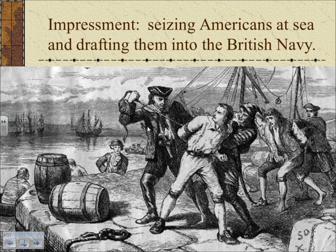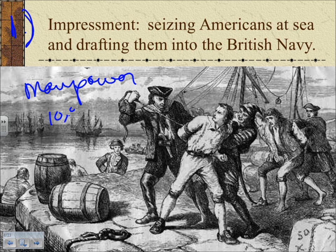Impressment is the number one issue cited as the reason we are going to declare war against Great Britain. British warships are seizing our ships, coming on board, and taking people with a British accent back to the British Navy. While fighting Napoleon, the British were losing manpower — something like 10,000 to 15,000 sailors were deserting from the British Navy every year. So the British made up that manpower through impressment, taking British subjects off ships, but they also caught many natural-born Americans in the process.